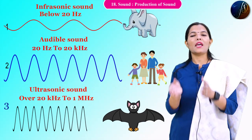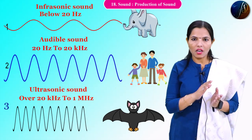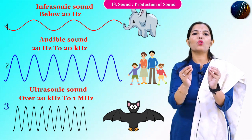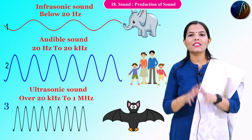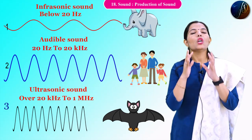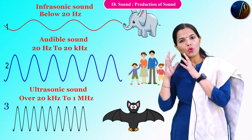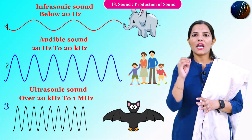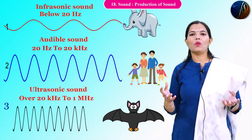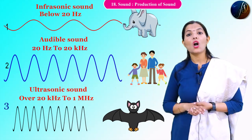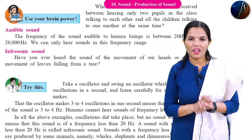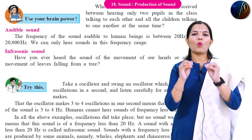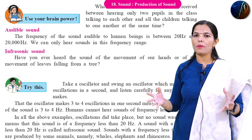Infrasonic sound has a frequency below 20 Hz. Now, what is audible sound? Audible sound is the sound which has a frequency between 20 Hz and 20,000 Hz. A sound with a frequency between 20 Hz to 20,000 Hz is called audible sound.